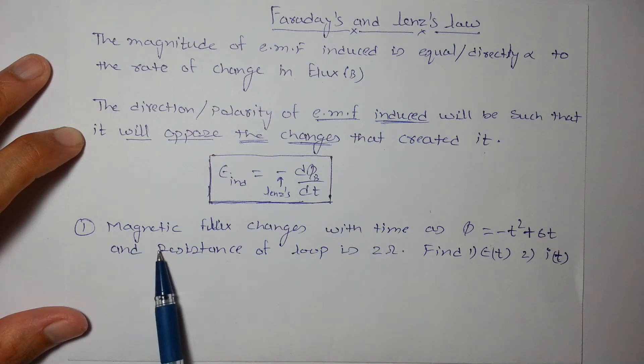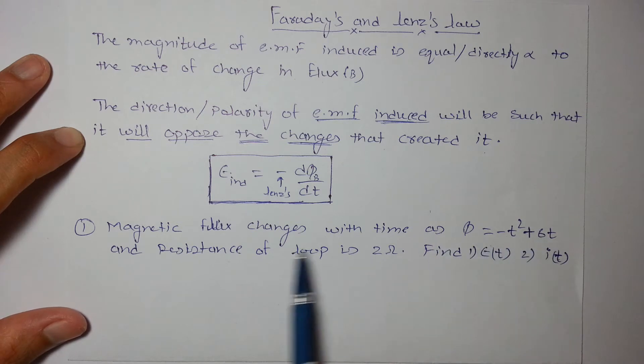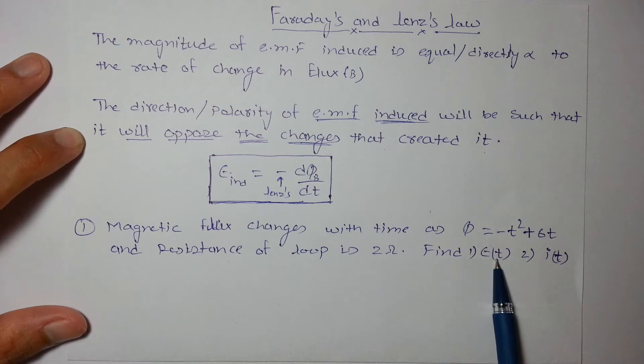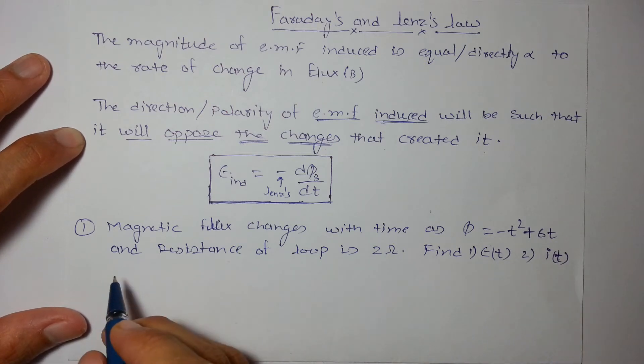So let's start with the first question. The magnetic flux changes with time as φ = -t² + 6t and the resistance of the loop is 2 ohm. Find EMF induced as a function of time and current as a function of time.